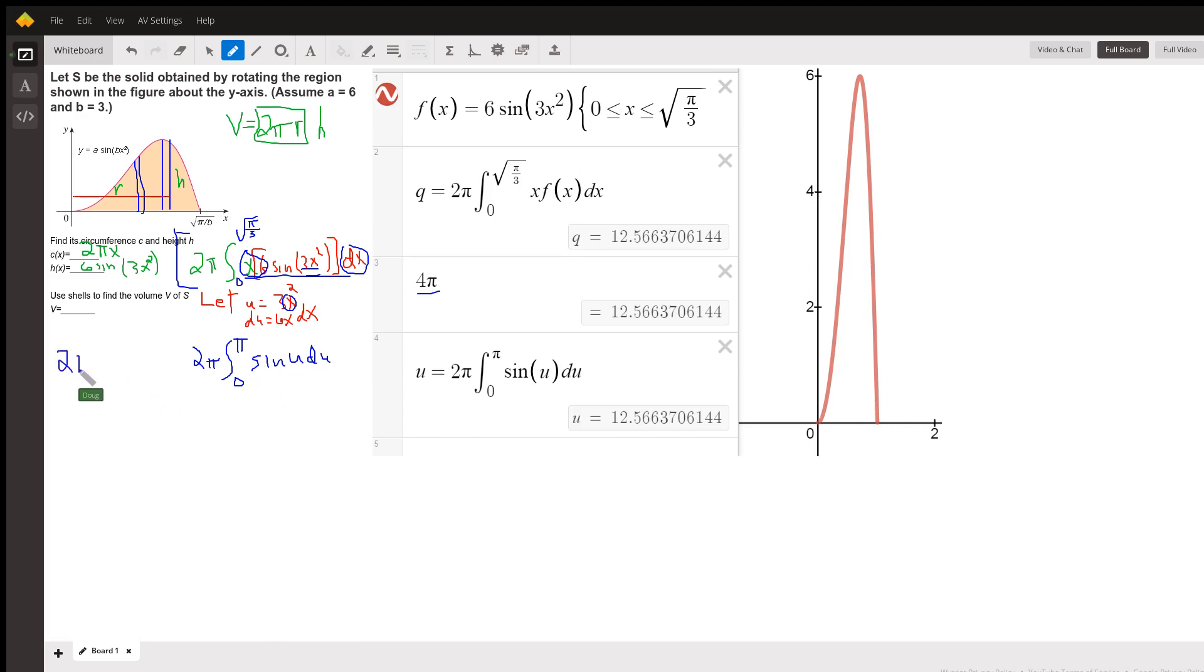And of course, now we just evaluate the antiderivative. For sine, the antiderivative is negative cosine. So I've got 2π times negative cosine of u evaluated from zero to π.